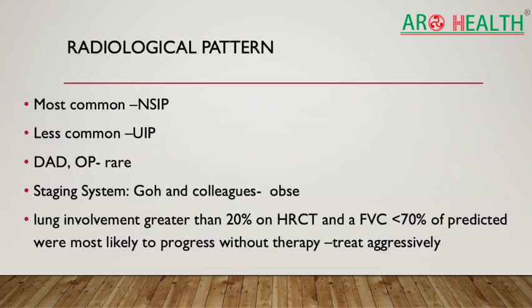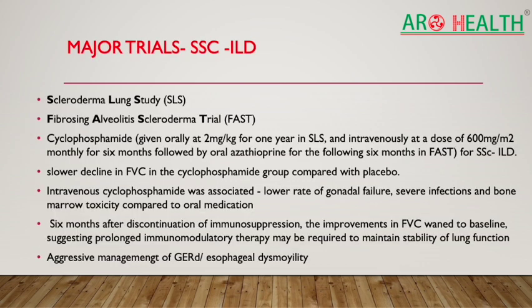In SSc-ILD, NSIP is the most common pattern; less commonly UIP, DAD, or OP. The Goh staging system is clinically useful: lung involvement greater than 20% on CT or FVC less than 70% of predicted indicates a patient is more likely to progress if not treated, and these patients should be aggressively treated from the start.